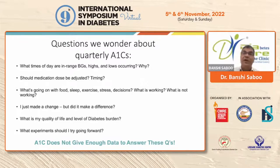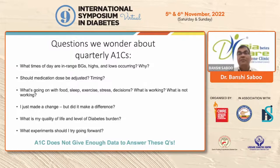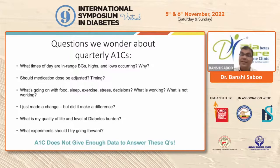If you change some medication or therapy today, will it make a difference? You have to wait three months to see the A1C. If it's not getting controlled, you don't know — those three months are already wasted and the patient may still be in hyperglycemia or developing hypoglycemia in between. The quality of life may not improve even with a good A1C, because there may be multiple hypo and hyper episodes. Only quarterly A1C will not give any such answers.